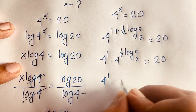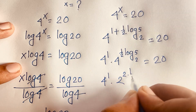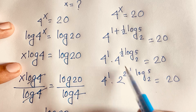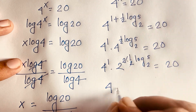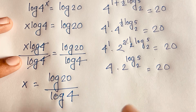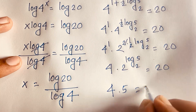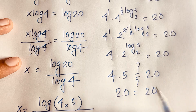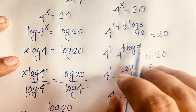We rewrite 4^(½ · log₂5) as (2²)^(½ · log₂5) = 2^(log₂5). The 2's cancel in the exponent. By the logarithm identity, 2^(log₂5) = 5. So we get 4 × 5 = 20 = 20, confirming x = 1 + ½ · log₂5 is correct.